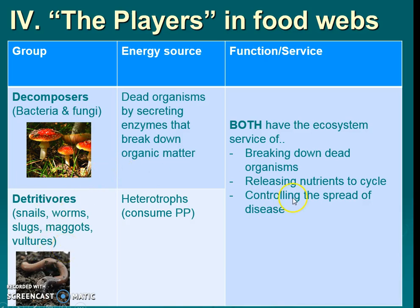Both decomposers and detritivores are considered heterotrophs and are involved in the release of nutrients back into the matter cycle, such as carbon, water, and nitrogen. We really depend on these things to help cycle our nutrients — without them, ecosystems would be devastated. A helpful way to remember them is 'FBI': Fungus, Bacteria, and Invertebrates, since most detritivores are invertebrates without backbones.